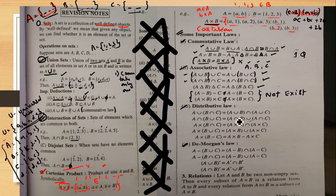Distributive property: A union (B intersection C) equals (A union B) intersection (A union C). Also, A intersection (B union C) equals (A intersection B) union (A intersection C). These are the distributive laws.